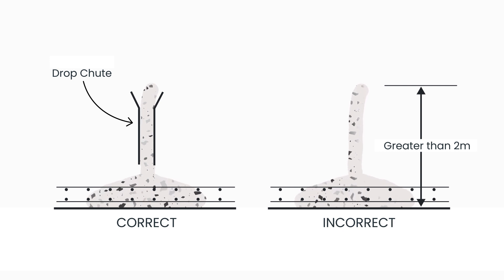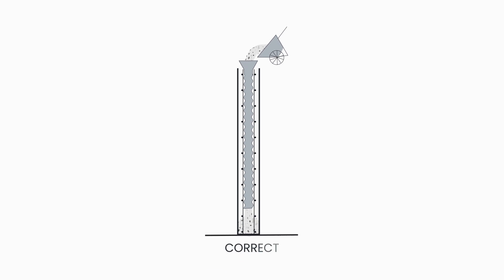When placing from chutes and barrows, discharge concrete into a hopper leading to a light, flexible drop chute.